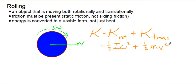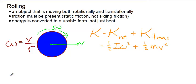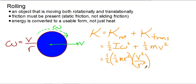If the object is rolling without slipping, then we know that angular speed equals linear speed divided by the radius: ω = v/r. Since I is always some coefficient times mr², for example a disk has I = ½mr², and omega squared becomes v²/r², the r² terms cancel out. We're left with some coefficient times mv² plus ½mv², and we can combine those terms together to get a single velocity expression.